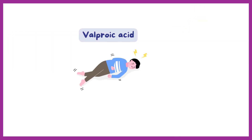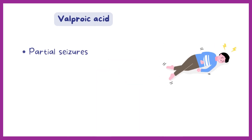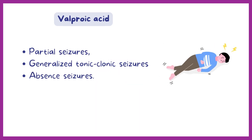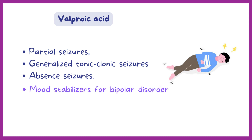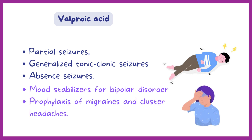Valproic acid is commonly used for the treatment of partial seizures, generalized tonic-clonic seizures, and absence seizures. Apart from seizures and epilepsy, it is also used as a mood stabilizer for bipolar disorder and as prophylactic therapy for migraines and cluster headaches.